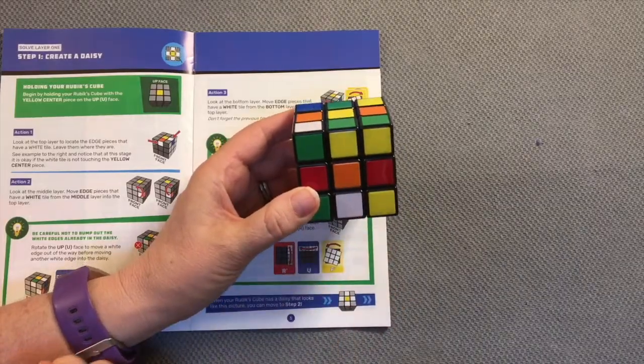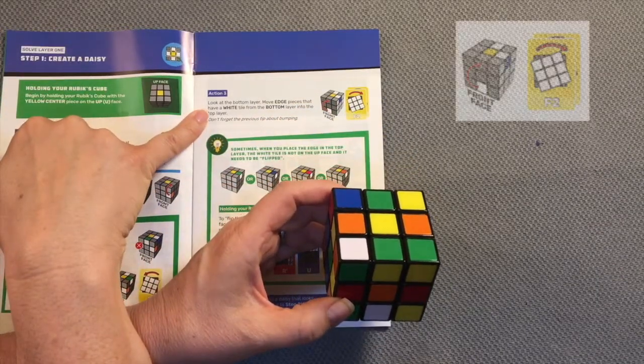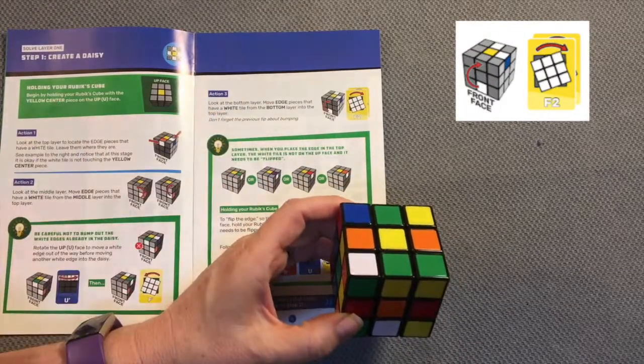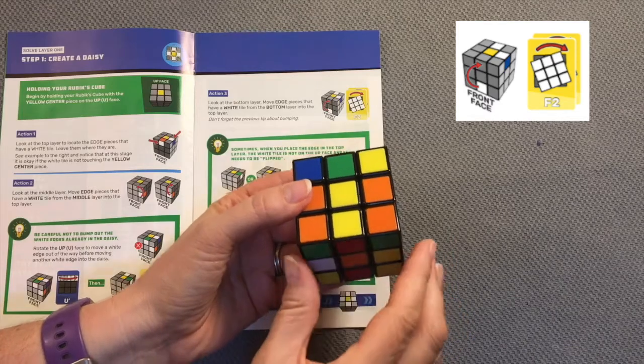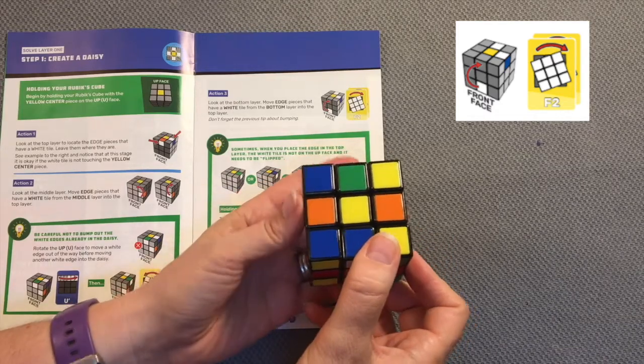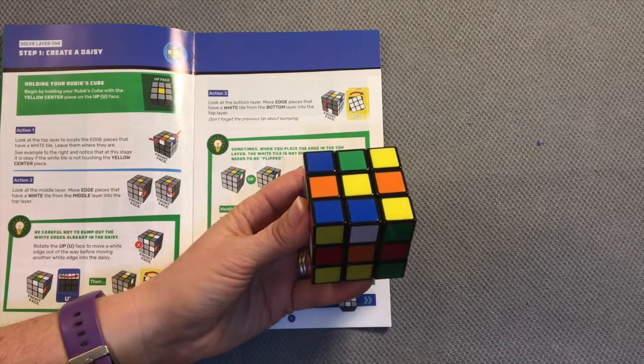Here I have a white tile on the bottom layer. I look at action three and notice I do an F2 move. I take my front face, rotate it once to the right and a second time to the right. The white tile that was on the bottom layer has now moved to the top layer.